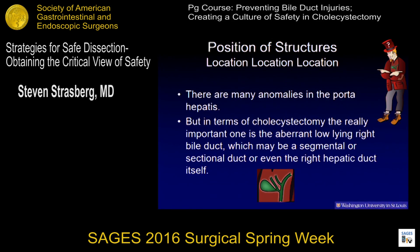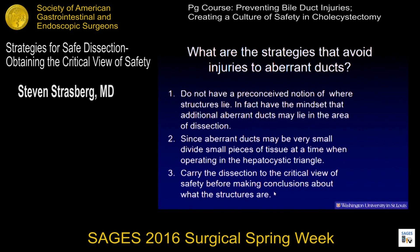There are many anomalies in the porta hepatis. In terms of cholecystectomy, the really important anomaly is the aberrant low-lying right bile duct, which may be segmental, sectional, or even the right hepatic duct. The strategies that avoid injuries to aberrant ducts when dissecting for the critical view: don't have a preconceived notion of where structures lie — have the mindset that aberrant ducts may lie in the area of dissection. Since they're very small, it's important to divide small pieces of tissue at a time when operating in the hepatocystic triangle. I teach my residents not to divide anything bigger at one time than the smallest thing they don't want to cut. If you divide big pieces of tissue and there's an aberrant duct in it, the first thing you may find is you're looking at the end of an aberrant duct.